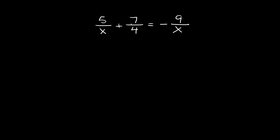So here we have 5 over x plus 7 over 4 is equal to negative 9 over x. The first thing you want to do is figure out what the LCD is. To do that, multiply all your different denominators together. We have two of the same denominator — an x and an x — so we don't use it more than once. So the LCD is simply x times 4, or 4x.